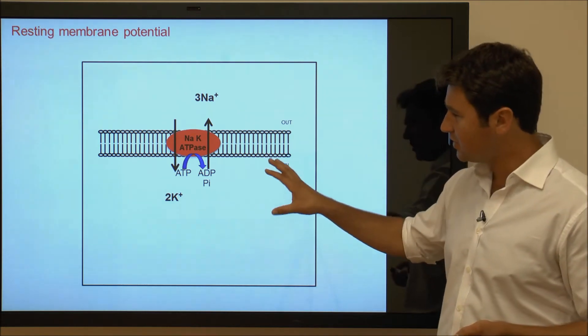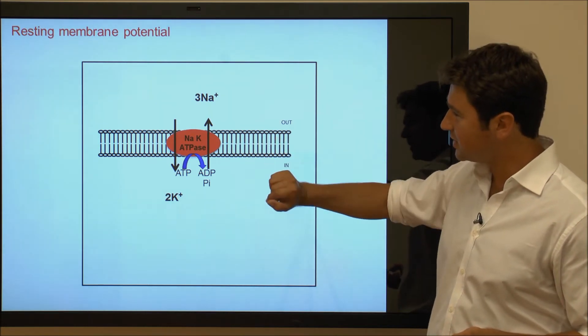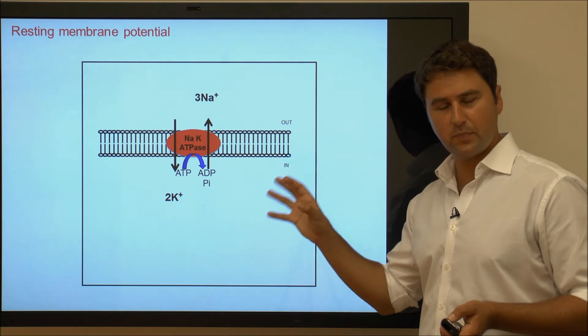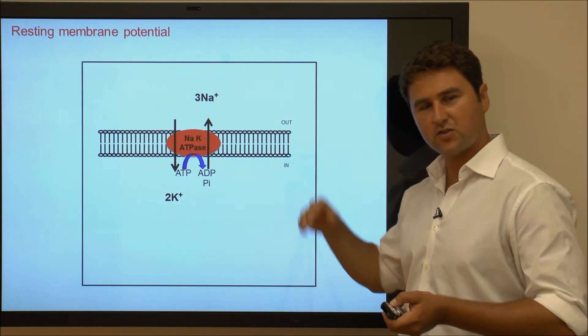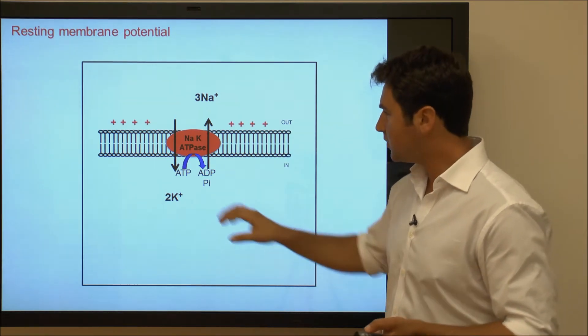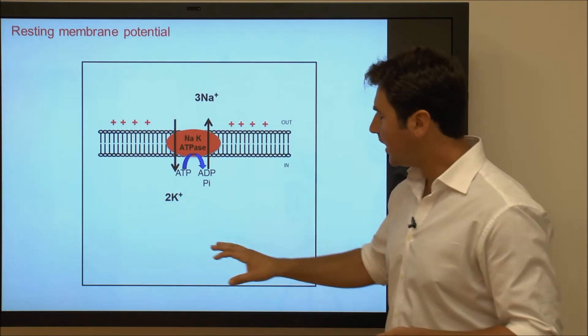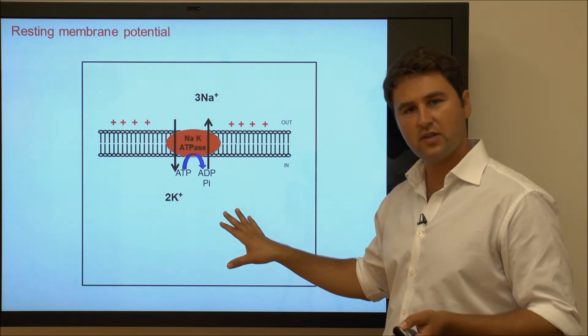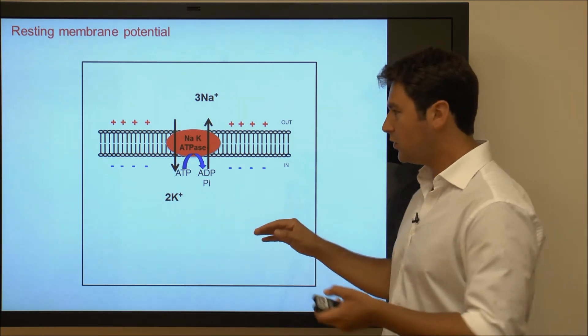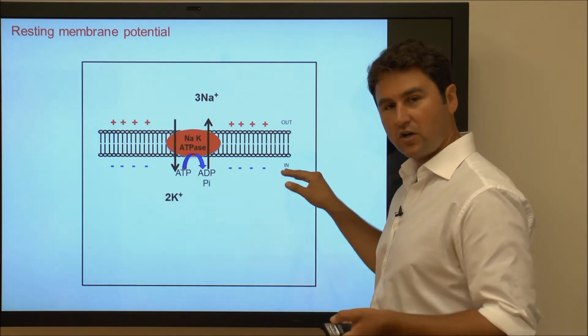What this actually means is that per every turnover of the pump, there is one positive charge being extruded out of the cell. This means there are lots of positive charges on the outside and not that many positive charges left on the inside of the cell, so negative charges are dominant.